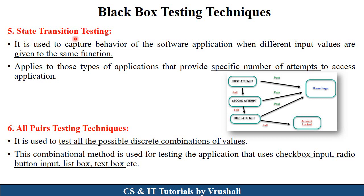The next technique is state transition testing. Suppose while logging into a Facebook account, you enter a wrong password three times. After the fourth incorrect attempt, your account gets locked. In state transition testing, the tester captures the complete behavior of the software product by trying different input values in a particular functionality where only a specific number of attempts are allowed. In the diagram: first attempt, second attempt, and third attempt with wrong passwords, and after that the account is locked.